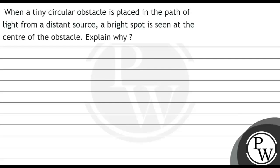Hello, let's read this question. When a tiny circular obstacle is placed in the path of light from a distant source, a bright spot is seen at the center of the obstacle. Explain why. The key concept you are going to use here is diffraction of light.